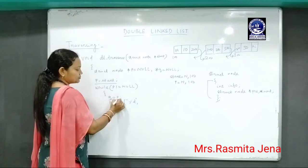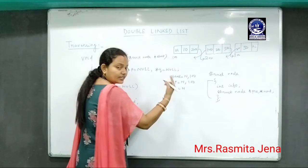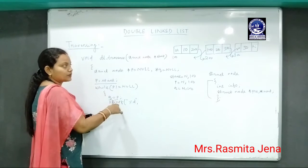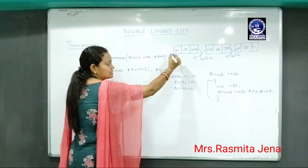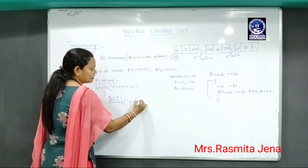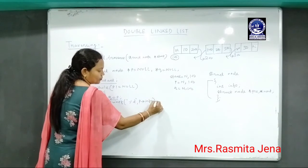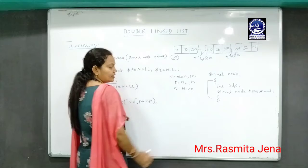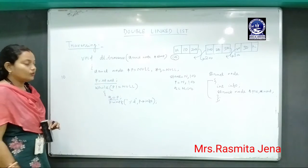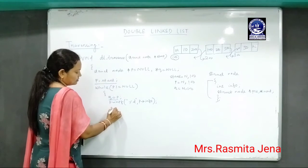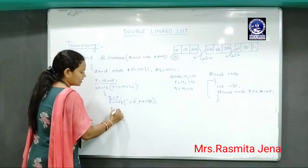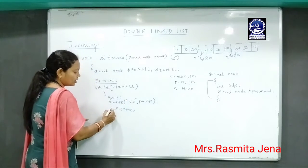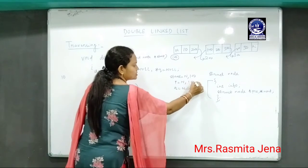When I write q equals p, q is initially null and becomes 100. I have to display the data part of this node. Since this address is contained by p, I write p->info. p contains 100 and at the info part of p it contains 10, so it will first display 10. Then for forward traversal I write p equals p->next, so p becomes 200.